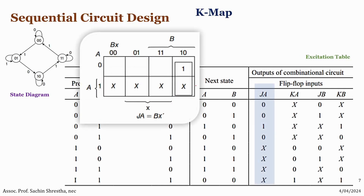For the K-map, the axes are A on one side and BX on the other, giving cells zero through seven. Filling in the K-map for JA: cells 0 through 3 give values 0, 0, 1, 0, and cells 4 through 7 give 0, 0, 1, 0. Grouping the ones at positions 2 and 6, the common term is AB̄X̄ — so JA equals AB̄X̄.